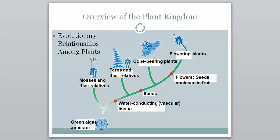Here is an evolutionary history among plants shown on a cladogram, with the red dots being the derived traits. We have our green algae ancestor. The first group is mosses and their relatives. The next derived trait is water-conducting vascular tissue — everything to the right will have it, but mosses will not. Then we have ferns and their relatives, which don't have seeds. Then cone-bearing plants. The next derived trait is flowers and seeds enclosed in fruit — cone-bearing plants do not have that. And then our flowering plants are the ones that do.